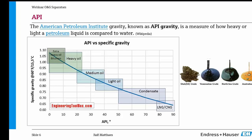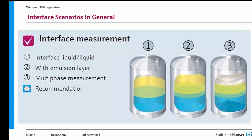It also depends on what kind of measurement purpose you want. We can have just an interface measurement between two different liquids, maybe an interface measurement with some small emulsion layer, or you may also see multi-phase interfaces. Is it okay for you to just see one interface between two liquids and not care about the emulsion layer in between, or do you want to see the emulsion layer? Maybe even multi-phase — not only oil and water, but also sand.